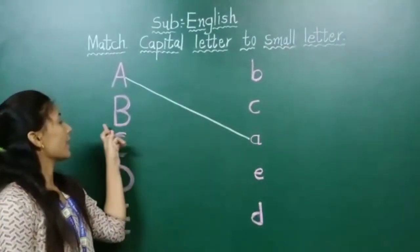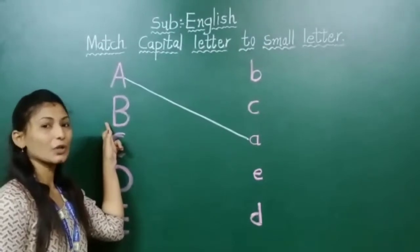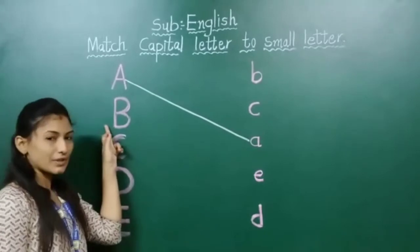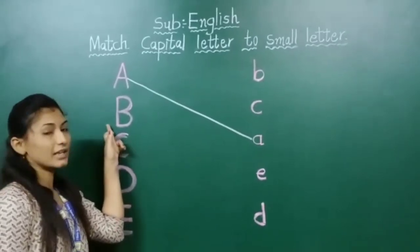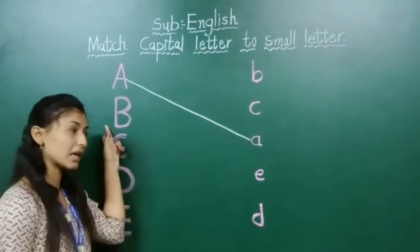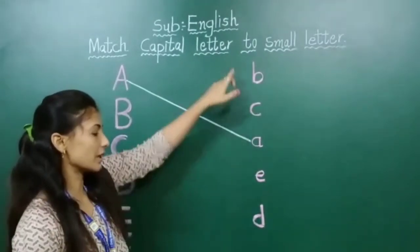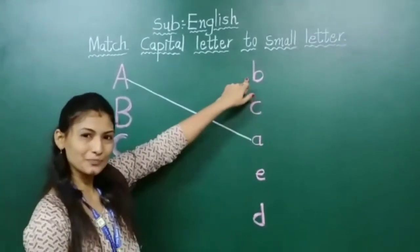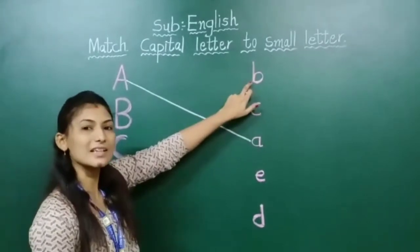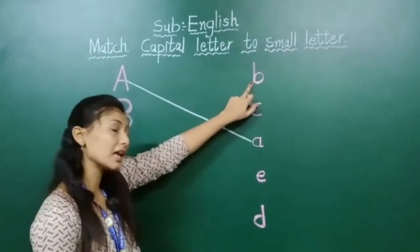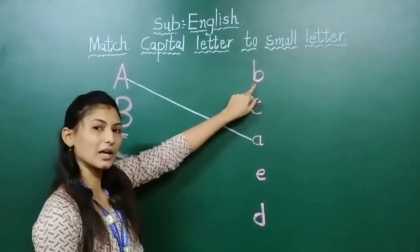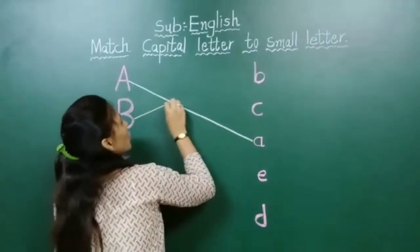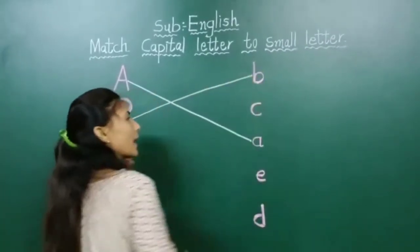Next. Which letter is this? Capital letter B. Find here — where is small letter B? Yes, this one. Which letter is this? Small letter B. Capital letter B को small letter B के साथ match करेंगे।